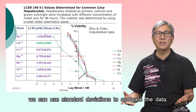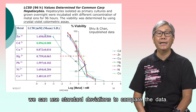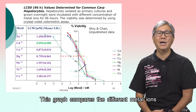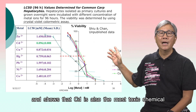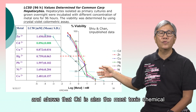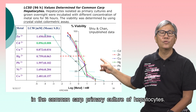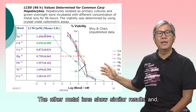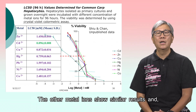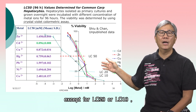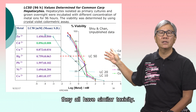We can use standard deviations to compare the data. This graph compares the different metal ions and shows that cadmium is also the most toxic chemical in the carp primary culture of hepatocytes. The other metal ions show similar results, and except for LC20 or LC10, they all have similar toxicity.